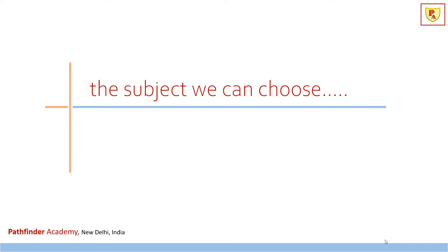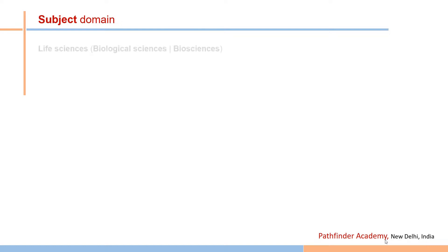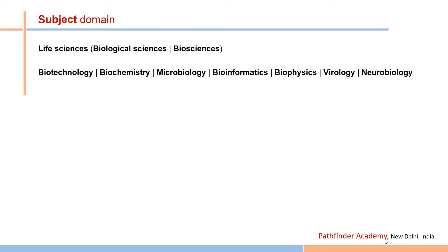The first important thing is the selection of subject. For MSc you have several options. You can opt for life sciences, biotechnology, biochemistry, microbiology, bioinformatics, biophysics, virology, or neurobiology.